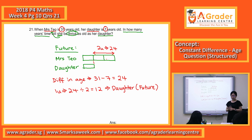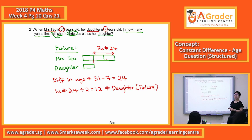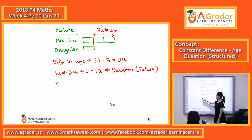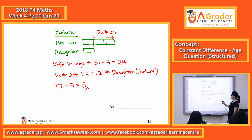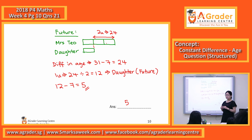But the daughter's age now is 7. The 12 is for the future. So how many years time? Five years. We take the future age minus the current age: 12 minus 7 equals 5. So in five years time, Mrs. Teo will be three times as old as the daughter.